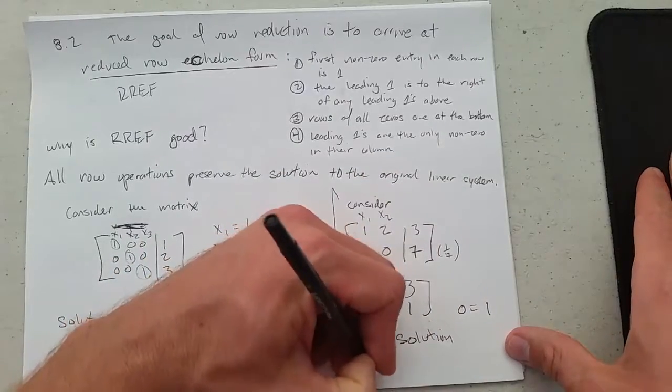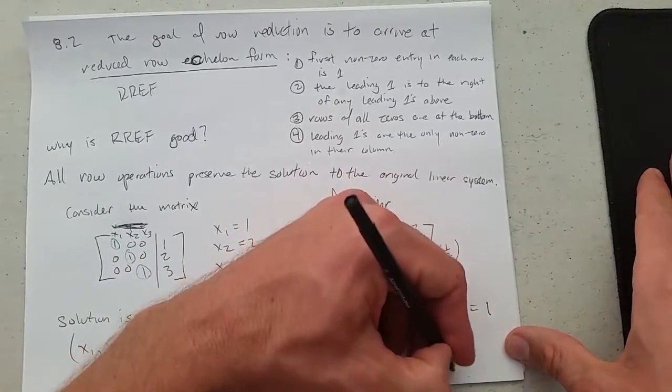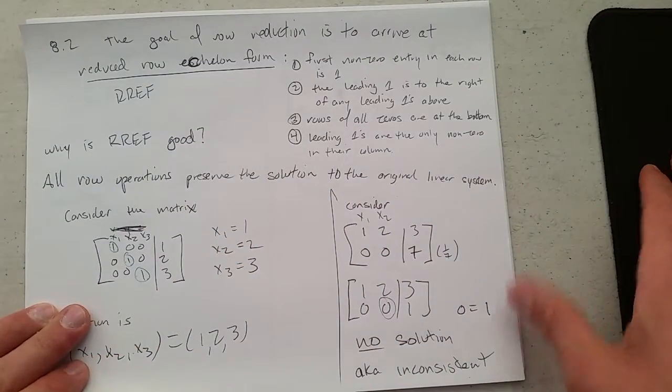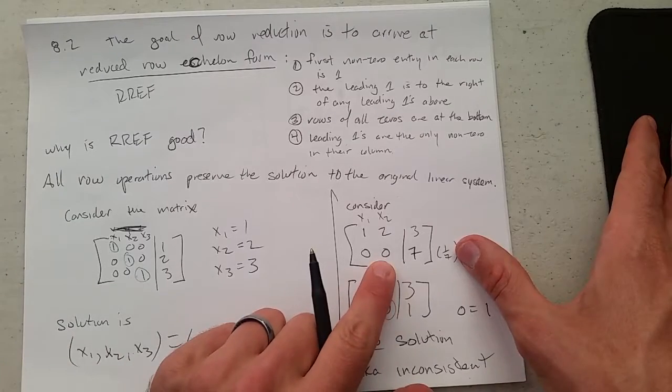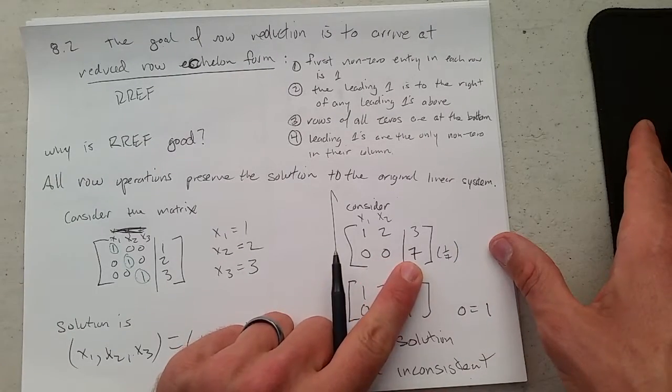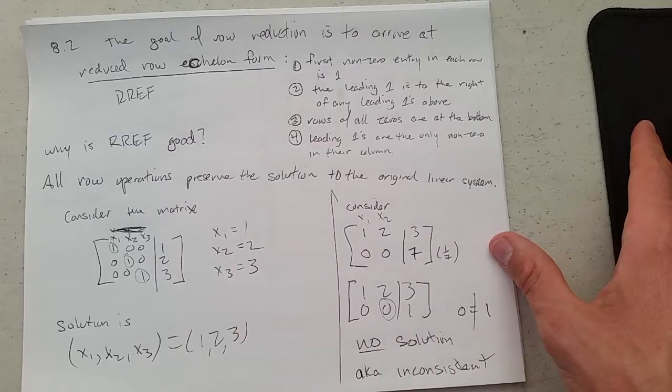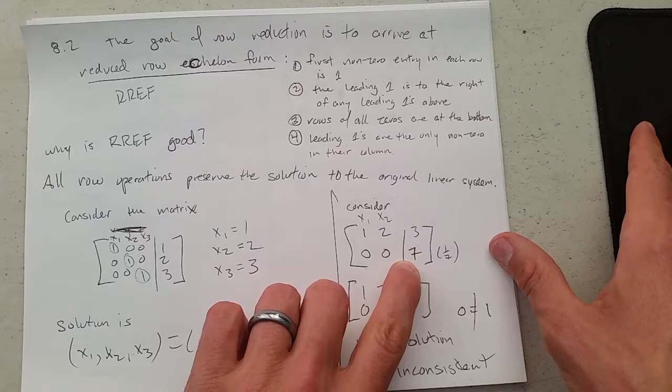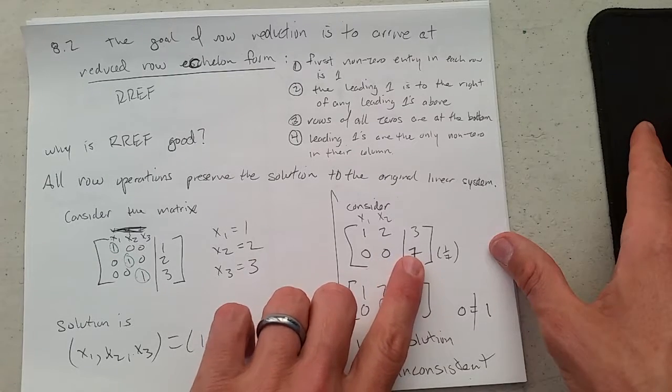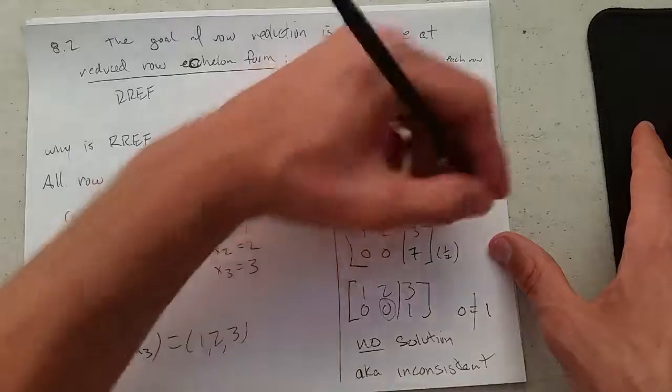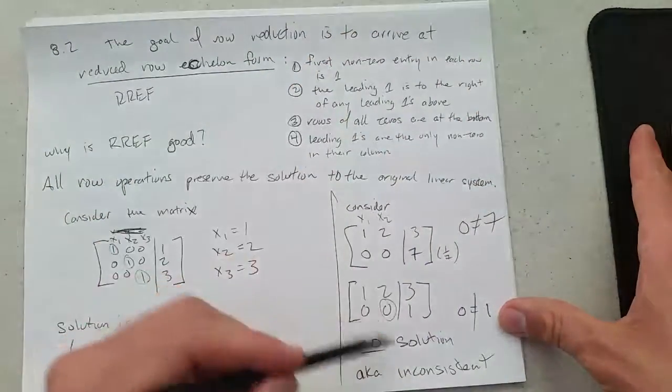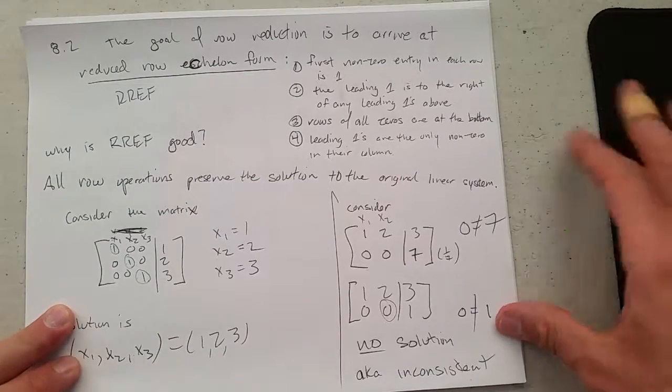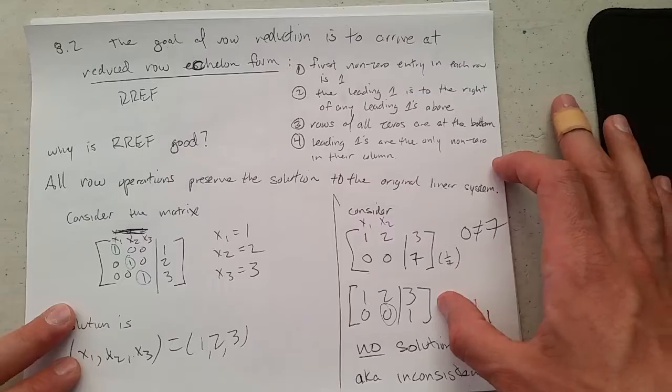So we would get no solution, also known as inconsistent. So this would be an inconsistent system. You could tell right here, if I wrote down the equation, I would get 0 equals 7. Obviously not true. So 0 also does not equal 1. You can see inconsistency pretty early on in your row reduction. So if you see inconsistency, you do not have to go any further. I could have written down 0 not equal to 7, skipped all this, and written no solution, inconsistent. So this would be inconsistent, although it is still in row-reduced echelon form.